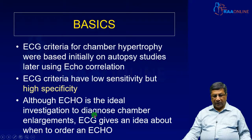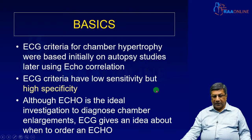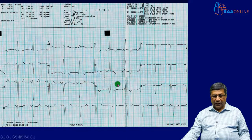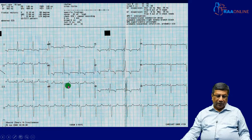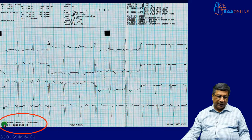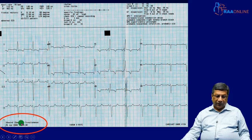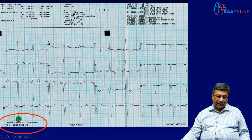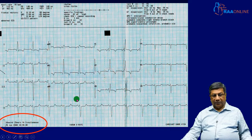ECHO is the ideal investigation to diagnose chamber enlargement, but ECG gives an idea of when to order one. If the ECG shows chamber enlargement, that patient will need an echocardiogram for detailed analysis. Before going into the criteria for diagnosing chamber enlargement, I emphasize: don't interpret an ECG without verifying the standardization signal — 10 small squares (1 millivolt) and recording speed of 25 millimeters per second. The criteria I will give are valid only under these conditions.